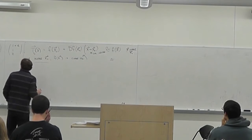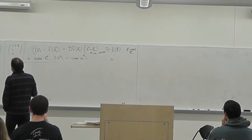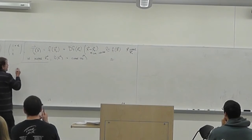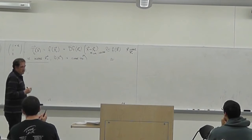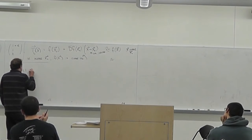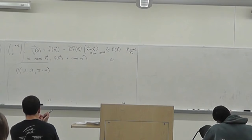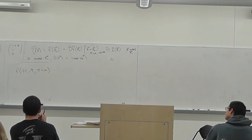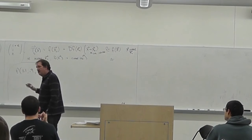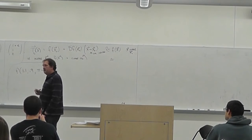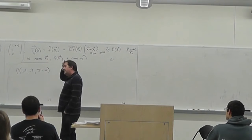Using this same example, if I wanted to estimate f(1.1, 0.9, π + 0.01), I use the tangent approximation based at (1, 1, π). The question came up: can you say tangent line when you have x, y, z? It's a hyperplane — here with three variables it's the tangent space.